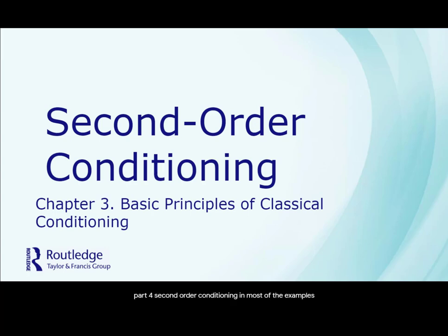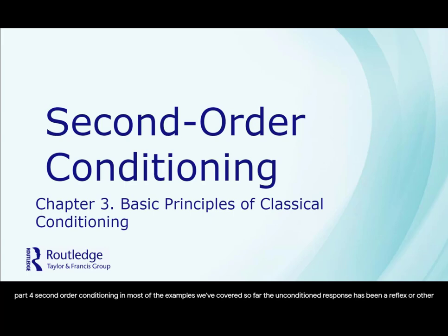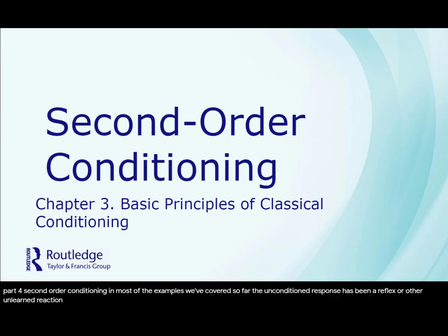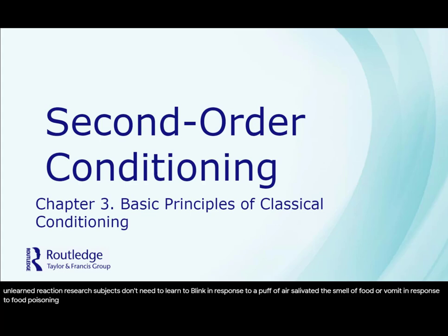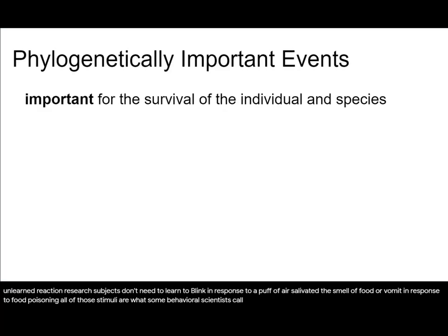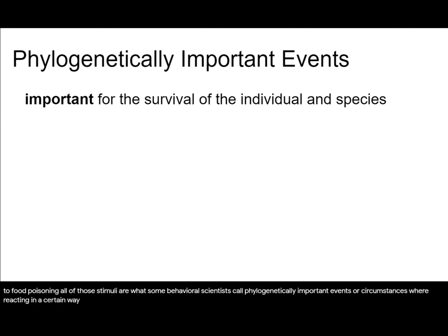In most of the examples we've covered so far, the unconditioned response has been a reflex or other unlearned reaction. Research subjects don't need to learn to blink in response to a puff of air, salivate at the smell of food, or vomit in response to food poisoning. All of those stimuli are what some behavioral scientists call phylogenetically important events, or circumstances where reacting in a certain way is important for the long-term and sometimes short-term survival of the organism.